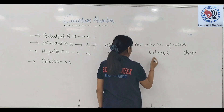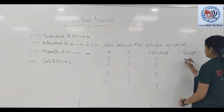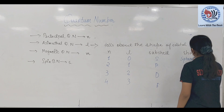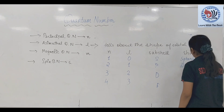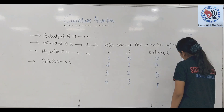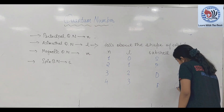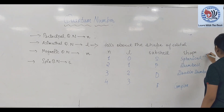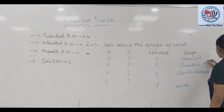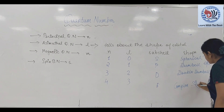Sub shells होते हैं: S, P, D, F। S sub shell का shape होता है spherical, P sub shell का shape होता है dumbbell, D का होता है double dumbbell, और F का होता है complex। xy axis पे S spherical आता है, P dumbbell आता है, D double dumbbell आता है, और F complex होता है।